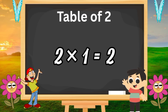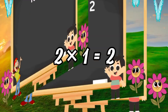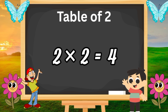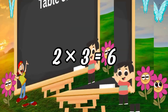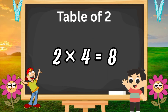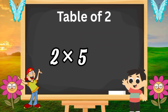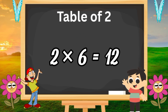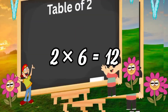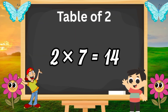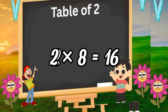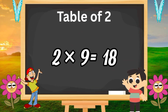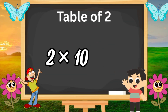Table of 2. 2×1 = 2, 2×2 = 4, 2×3 = 6, 2×4 = 8, 2×5 = 10, 2×6 = 12, 2×7 = 14, 2×8 = 16, 2×9 = 18, 2×10 = 20.